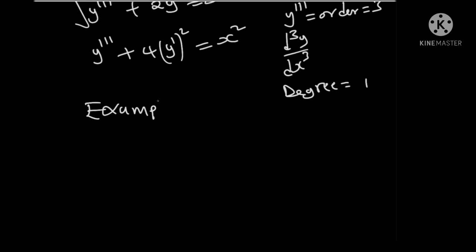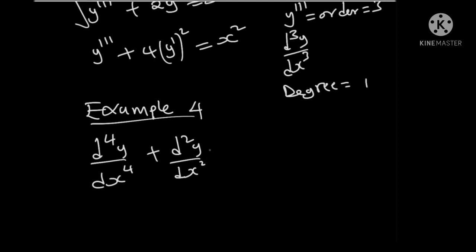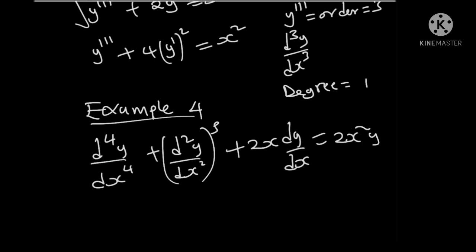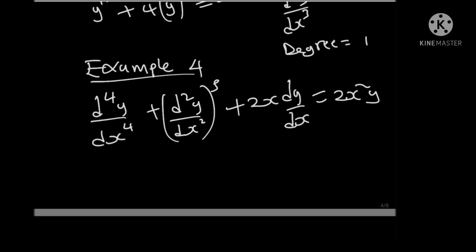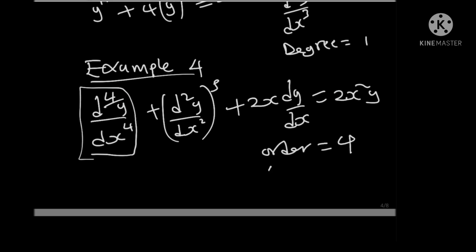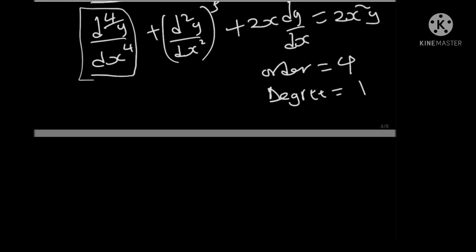Example 4: suppose we have (1 plus d squared y over dx squared) raised to the power 5 plus 2x(dy over dx) equals to 2x squared y. First, identify the highest differential coefficient — in this case, d squared y over dx squared is the highest. Therefore, the order is given by the highest derivative, which is 4 in this context, and the degree is 1 because that term is raised to power 1.